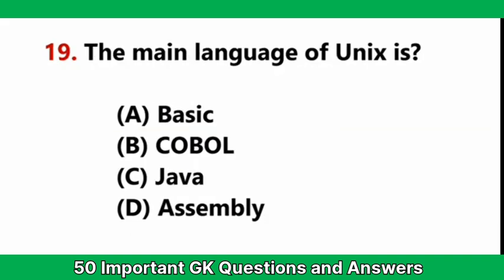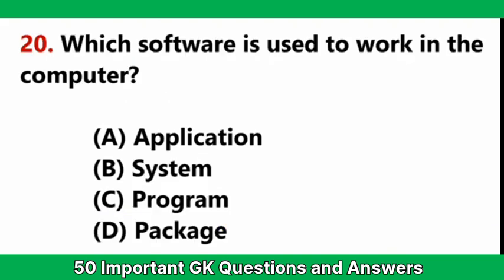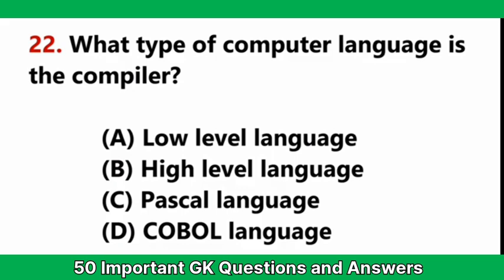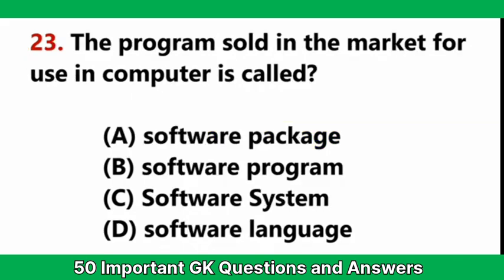The main language of Unix is — Answer D: Assembly. Which software is used to work in a computer? — Answer A: application. Which software controls the hardware of the computer? — Answer A: system software. What type of computer language is the compiler? — Answer A: low level language. The program sold in the market for use of a computer is called — Answer A: software package.